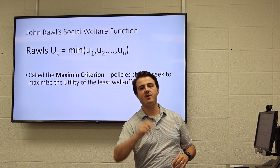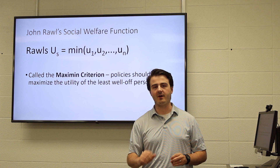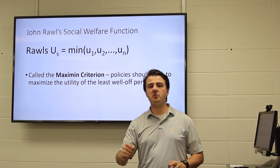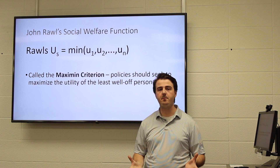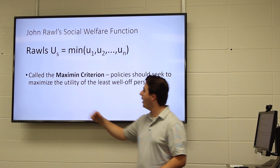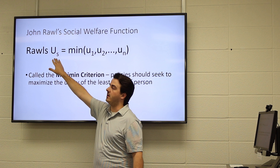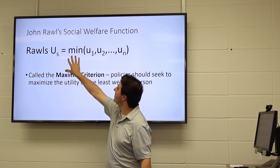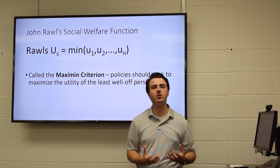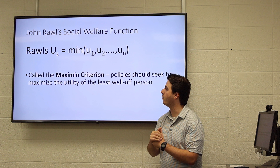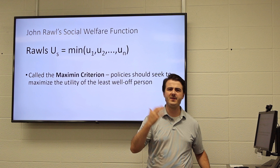The philosopher John Rawls creates the maximin criterion — maximin, not maximum. He believes we ought to make the goal of society be to help the people that are in the worst situations. Rawls' social welfare function — his measurement of the utility that society creates — would be the measurement of whoever has the least, the minimum utility in our society. We find the people that are hurt most and we want to help them out of that situation. That is the way to measure a successful society, according to John Rawls.